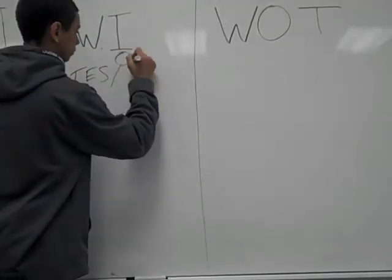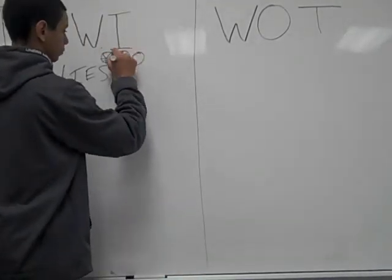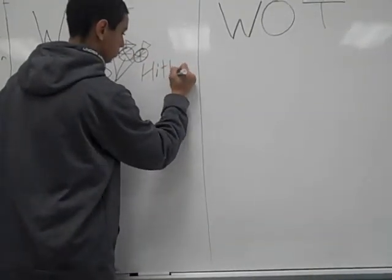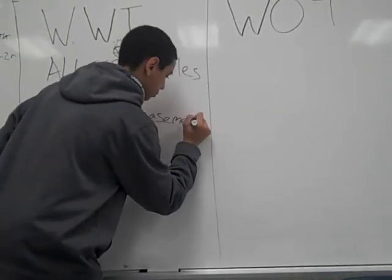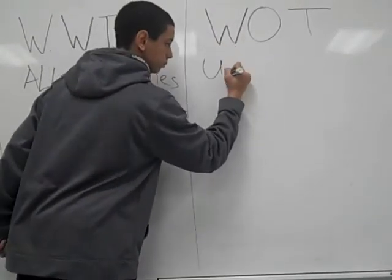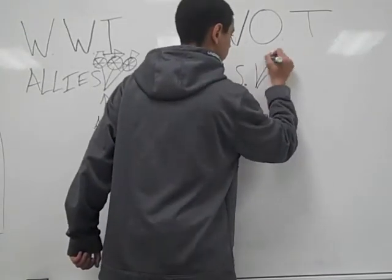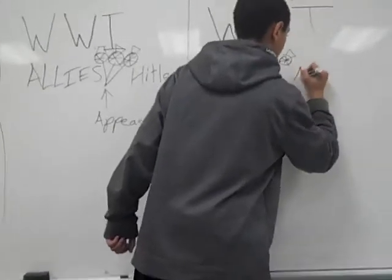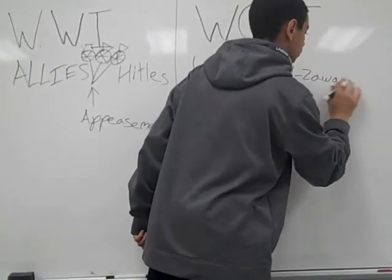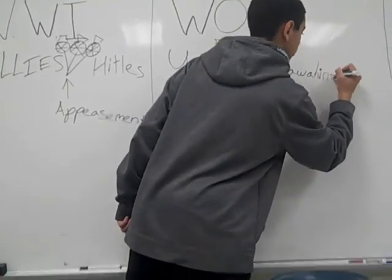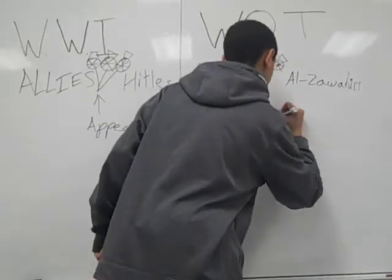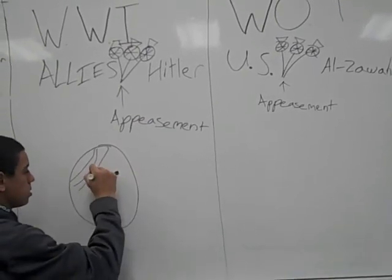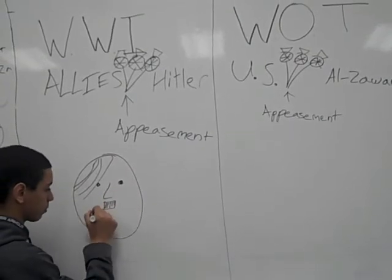The policy that the Allies took on Hitler was appeasement. The policy that the U.S. should take on Al-Zawahiri, the new leader of Al-Qaeda, is appeasement also. Hitler took the Allies' appeasement to his advantage and took over Czechoslovakia.